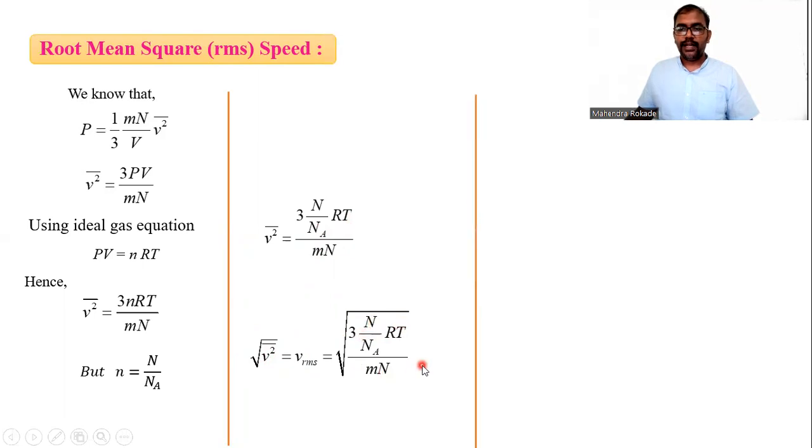We can cancel this n. The next step we get: 3RT divided by m into NA. NA is the Avogadro number. This is the formula for RMS velocity.